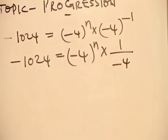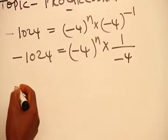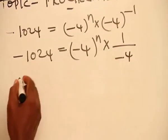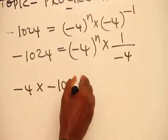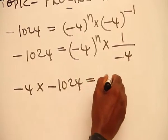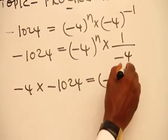Once again, we will cross and multiply by minus 4. So minus 4 multiplying minus 1024 is equal to minus 4 raised to the power n.